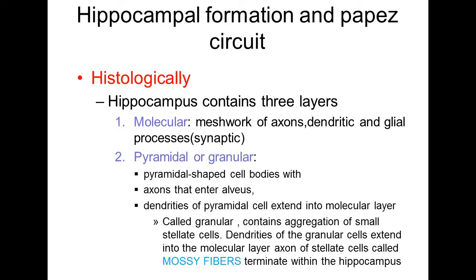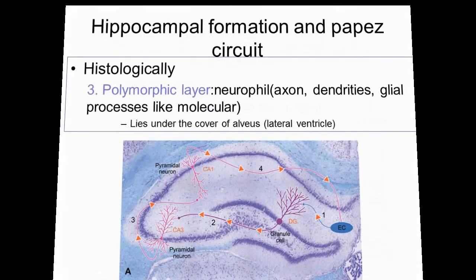Histologically, the hippocampal region contains different types of cell layers with specific features. The first is the molecular layer, which contains a network of axons, dendrites of cells, and glial processes — containing white matter elements, dendrites, and axons that transmit orders and stimuli to and from the hippocampus.